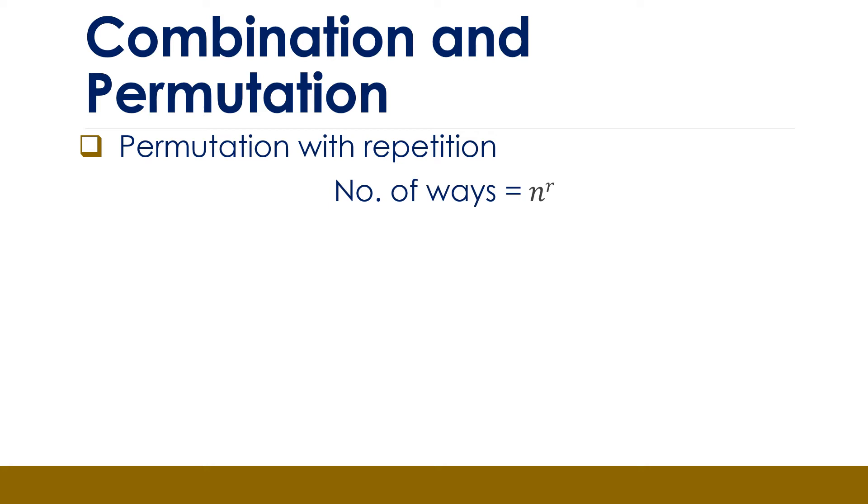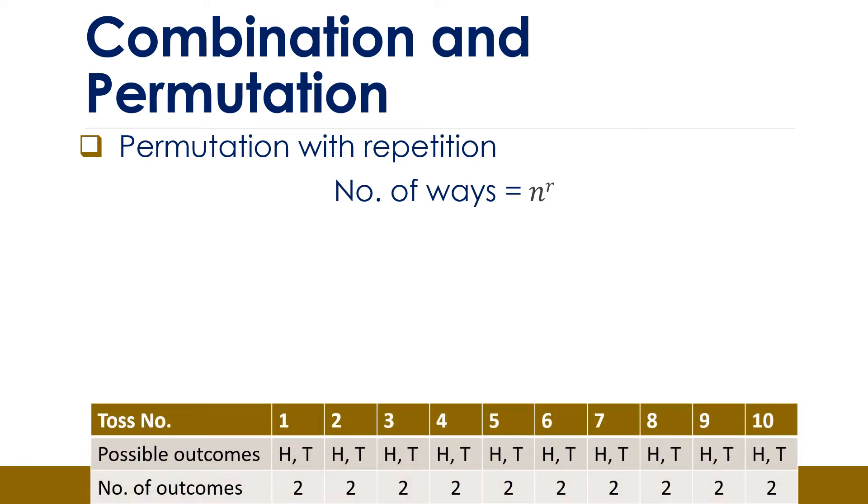Consider, for example, where we have a coin which we toss 10 times. What is the total number of possible outcomes? For each toss, we have two possible outcomes, head or tail, and you can see them here.